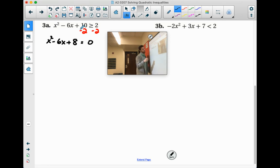Remember, the inequality doesn't really matter right now. So if we were to factor that, it'd be x minus 4, x minus 2, which gives us x equals positive 4 and x equals positive 2.